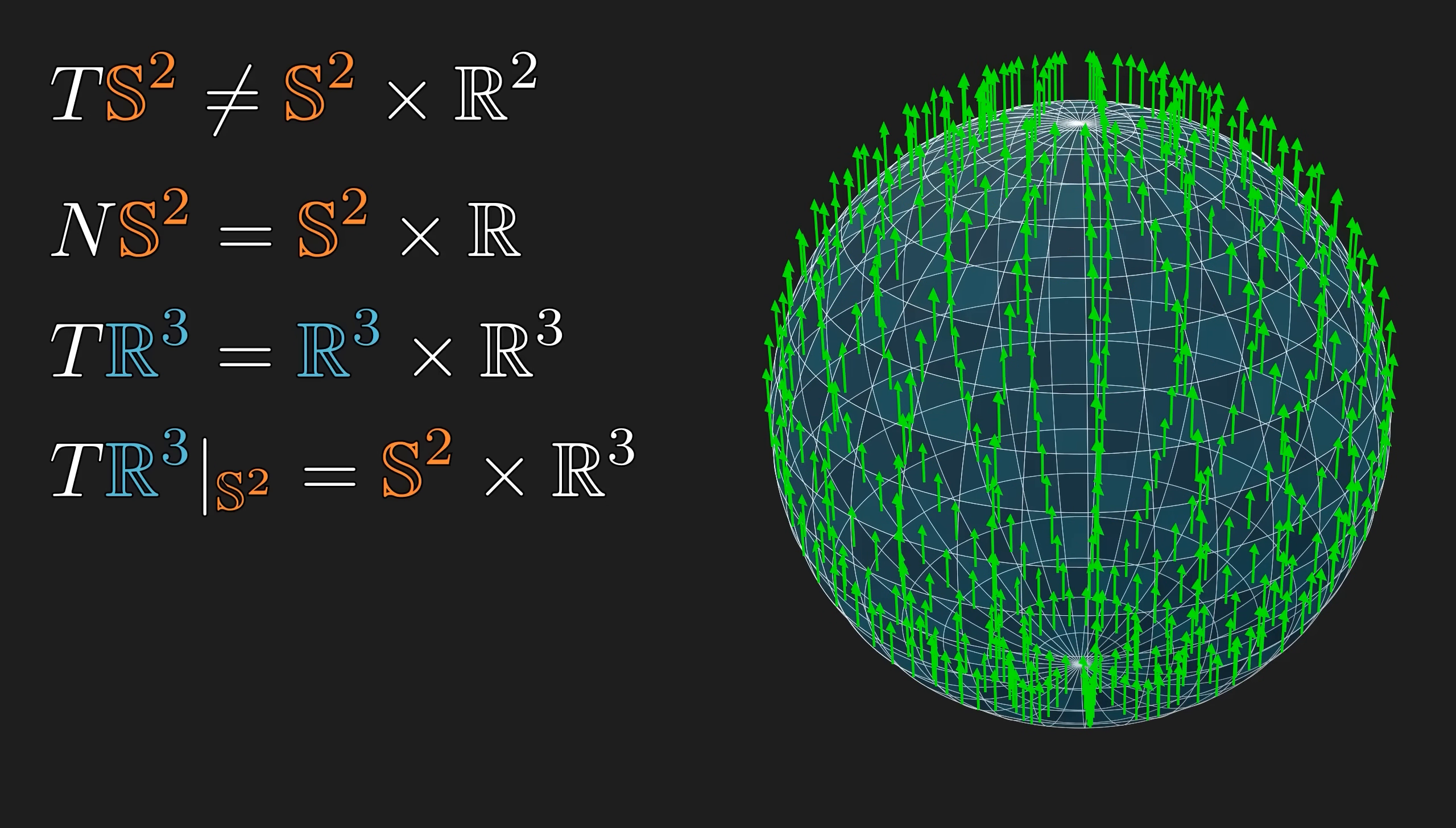And this type of vector bundle, which points in any direction within the ambient space, is called, as you guessed it, the ambient bundle.